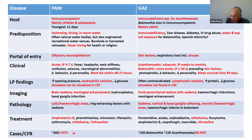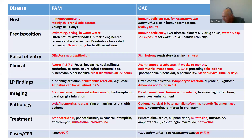For GAE, the numbers in the literature are about 300 PAM cases, 200 Balamuthia, and around 150 Acanthamoeba GAE cases. Mortality rates are probably improving with better recognition and treatment. Both infections remain extremely serious.